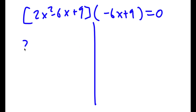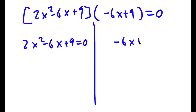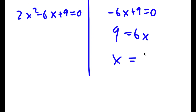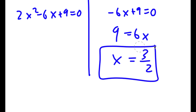This gives me two equations: 2x squared minus 6x plus 9 is equal to 0, and negative 6x plus 9 is equal to 0. For the linear equation, negative 6x plus 9 equals 0 gives 9 equals 6x, so x is equal to 9 over 6, which simplifies to 3 over 2. This is one solution of x.